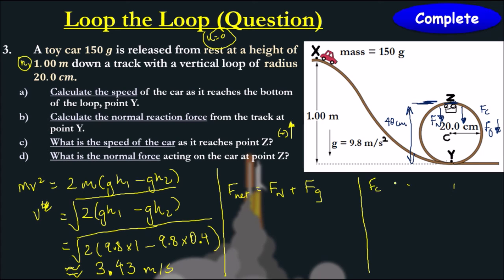So fc at z, mv squared over r. Our mass has not changed. Our velocity is 3.43 squared, and the radius of our motion is 20 centimeters. Make sure we convert that into meters. Our centripetal force is approximately 8.82 newtons.